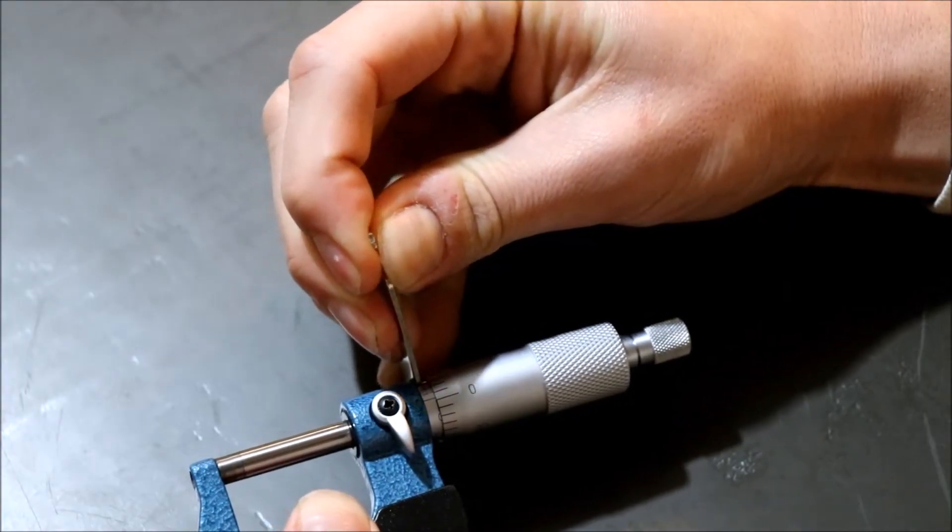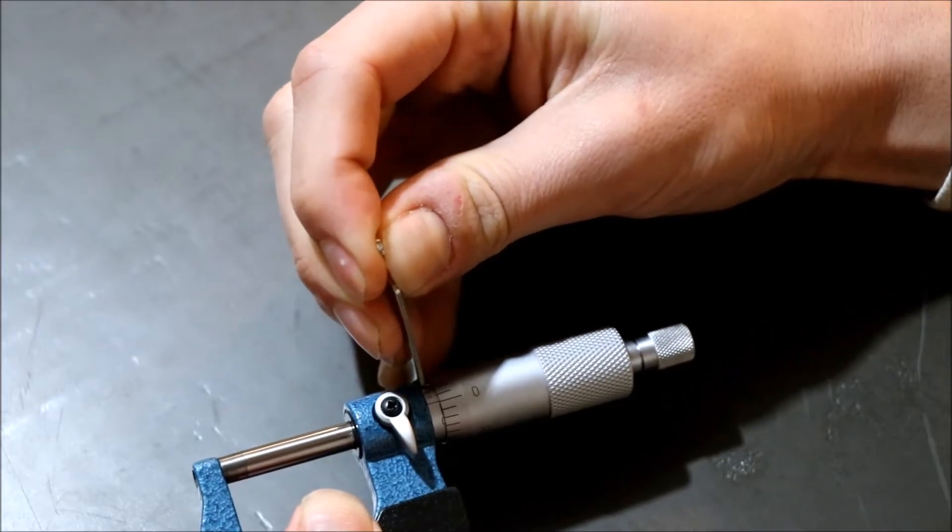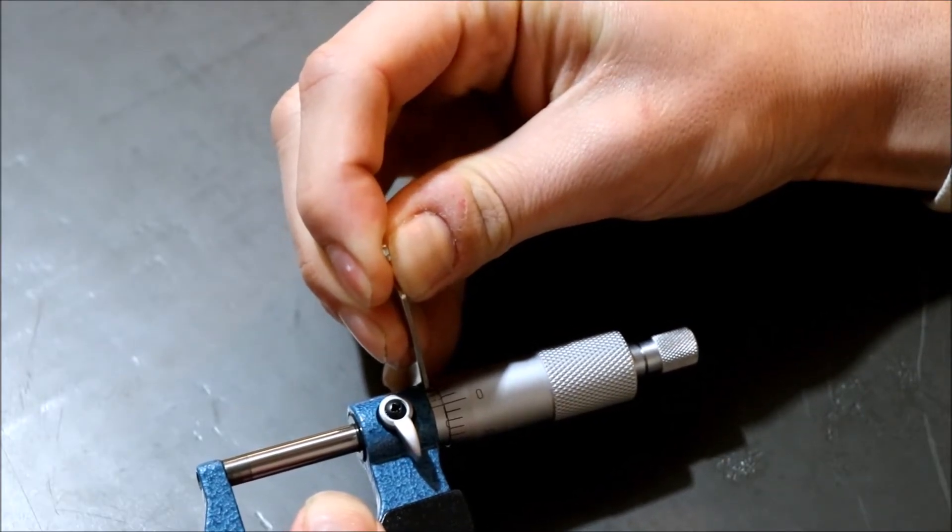this thing. It turns really pretty tight because it's not meant to freely spin. Turn it until that zero line lines up. But because this is a one ten-thousandth of an inch micrometer, we're not done